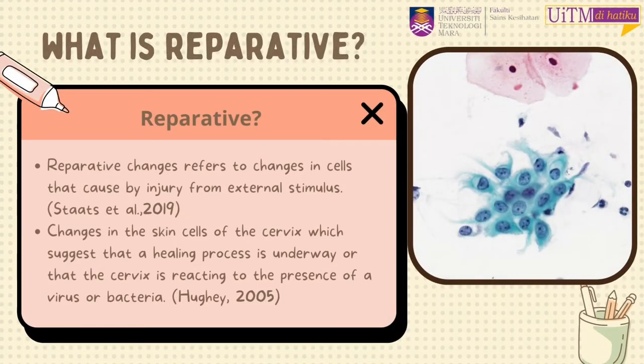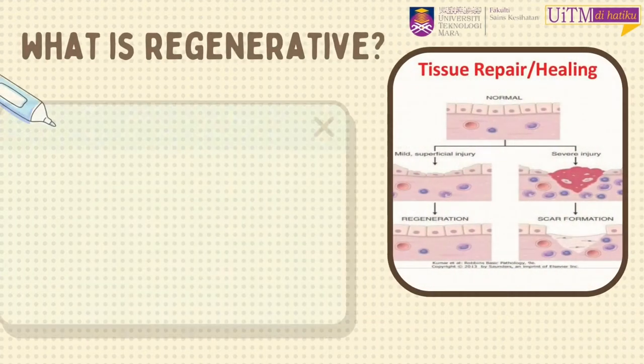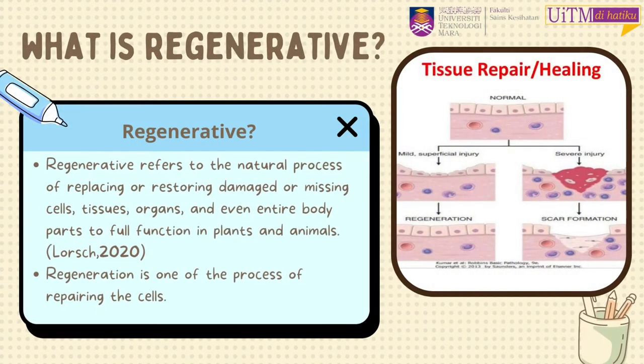Reparative changes are changes in cells that occur due to injury from an external stimulus. Regeneration is a natural process of replacing the damaged cells, tissues, organs, and even entire body parts. Regeneration is actually one of the processes of repairing the cells.